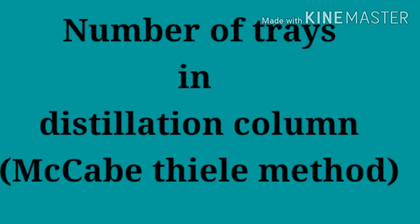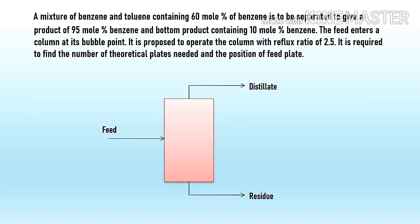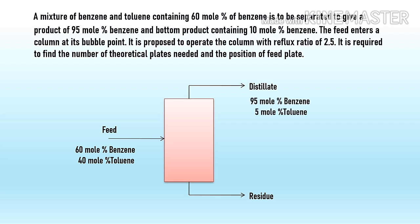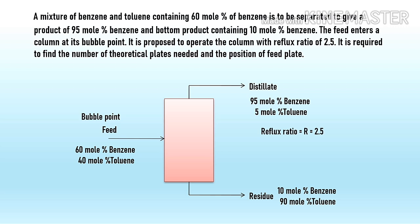Today's topic is how to calculate the number of trays or plates in a distillation column using the McCabe-Thiele method if the feed is at its bubble point. A mixture of benzene and toluene containing 60 mol percent benzene is to be separated to give a top product of 95 mol percent benzene and a bottom product containing 10 mol percent benzene. The feed enters the column at its bubble point and the reflux ratio is 2.5.